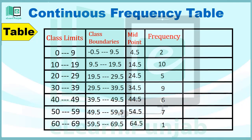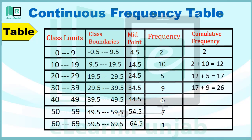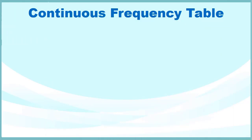اب ہم Next Column Cumulative Frequency کا بنائیں گے۔ Cumulative Frequency کی First Value وہی ہوگی جو Frequency کی ہے — جیسے کہ Frequency کی First Value 2 ہے تو Cumulative Frequency کی First Value بھی 2 ہوگی۔ باقی Values میں Frequency کی Value میں Cumulative Frequency کی پچھلی Value کو Add کیا جائے گا۔ جیسا کہ Frequency کی Second Value 10 ہے اور Cumulative Frequency کی پچھلی Value 2 ہے، تو 2+10=12۔ اسی طرح 12+5=17، پھر 26، 32، 39 اور 40 حاصل ہوں گے۔ تو یہ تھا ہمارا آج کا Lesson۔